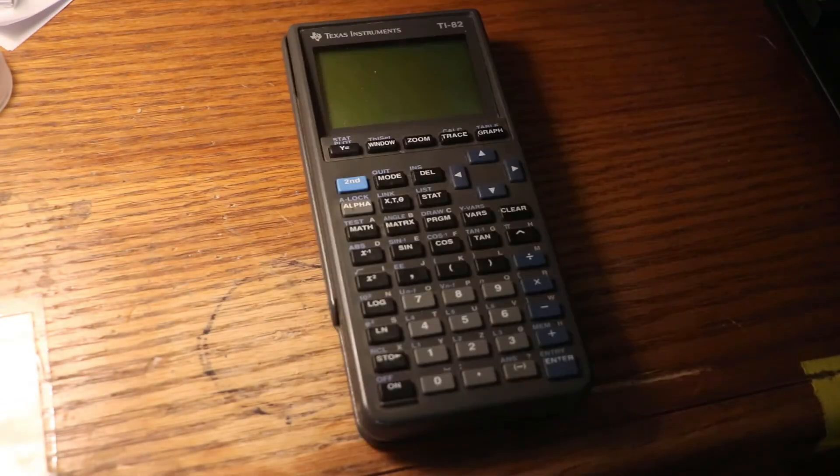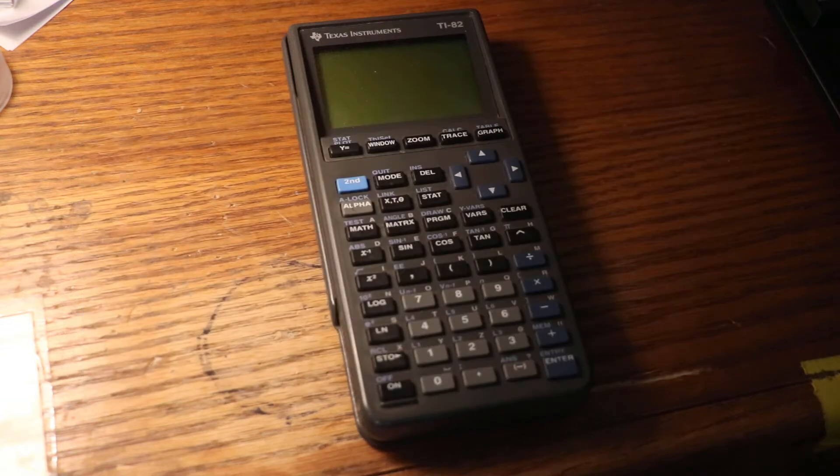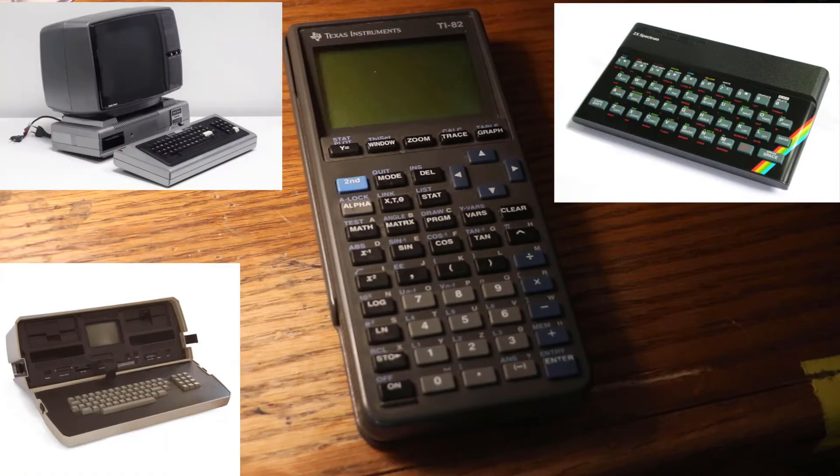This calculator is a Texas Instruments TI-82. What's special about it is it actually has a Zilog Z80 CPU, a 6MHz model. If you don't know much about the Zilog Z80, it was very popular in computers in the late 70s, early 80s. It's around in a lot of different computers. I'll probably put a few pictures up while this video's going.